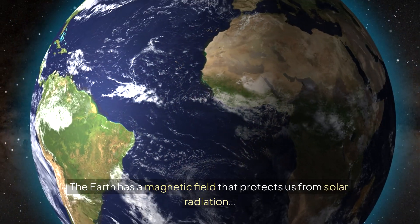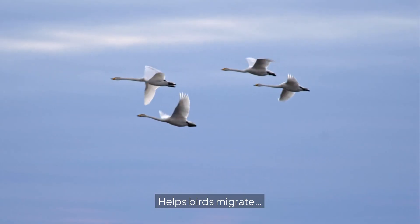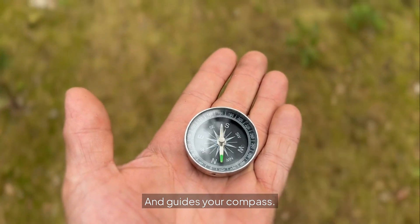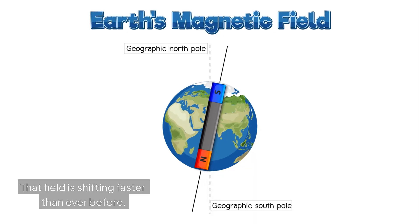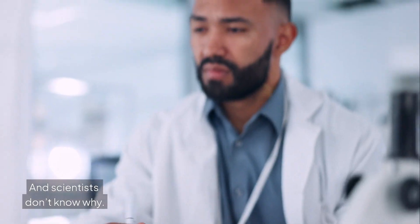The Earth has a magnetic field that protects us from solar radiation, helps birds migrate, and guides your compass. But right now, something strange is happening. That field is shifting faster than ever before, and scientists don't know why.